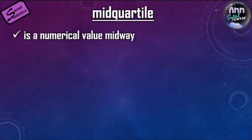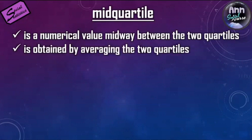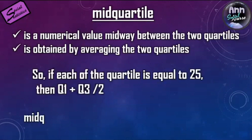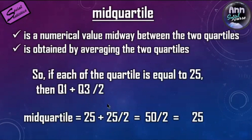The midquartile is a numerical value midway between the two quartiles, obtained by averaging Q1 and Q3. Each quartile equals 25 — just think of dividing 100 into 4 equal parts, or like the four 25-cent coins in one peso. The formula is Q1 plus Q3 divided by 2, and since the parts are equal, it is straightforward to obtain.